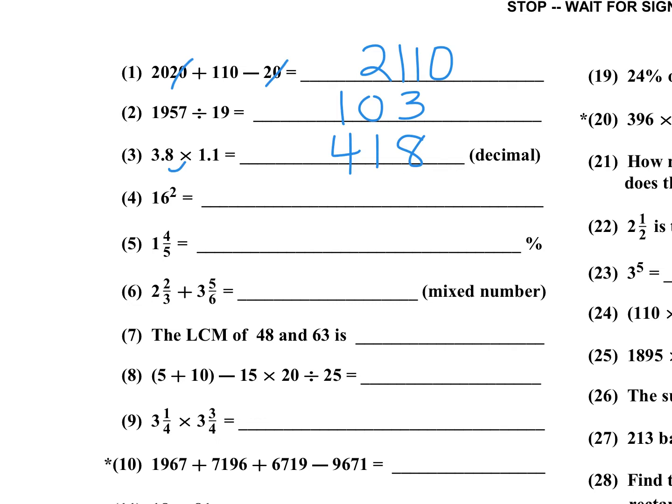Number 4: 16 squared, that's 256. Make sure you memorize your squares, they do come out quite a bit. Number five: 1 and 4 fifths is 1.8 as a decimal. As a percent that's 180, which is 1.8 times 100. Number 6: 2 and 2 thirds plus 3 and 5 sixths. The 2 thirds is 4 over 6 plus 5 over 6, that's 9 over 6. I have to reduce that, so 9 over 6 is 1 and a half. Write the 1 half, carry a 1, so then I have 2 plus 3 plus my carry, that's gonna be 6 and a half.